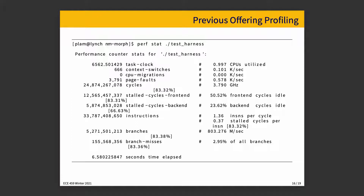There are 1.36 instructions completed per cycle, 0.37 stalled cycles per instruction, and there were 5 billion branches, of which we mispredicted only 2.95% — so that's pretty good. At the end, this is over a run that took 6.58 seconds of real wall clock time.